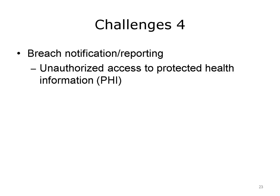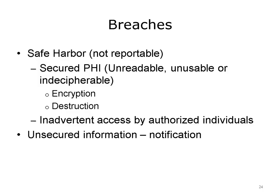The new breach laws apply to both paper and electronic systems. Although the focus is on notification and reporting, there is also what is called a safe harbor for some information — that is, breaches of certain information do not need to be reported. Breaches of secured information, that is, information that is unreadable, unusable, or indecipherable to unauthorized individuals by either encryption or destruction, are not reportable. Also, certain inadvertent breaches by authorized individuals are not reportable. The major challenges are in the notification requirements for unsecured information.